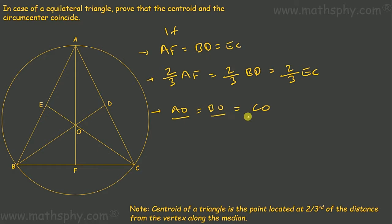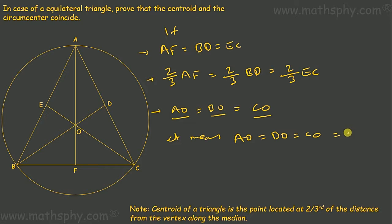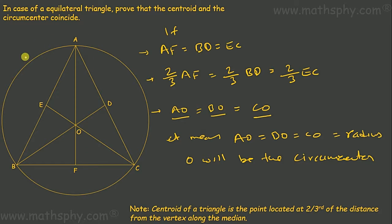Therefore AO is equal to BO is equal to CO. When AO, BO, and CO are equal, they are the radius of the circumscribed circle, making O the circumcenter. Since O is the centroid and also the circumcenter, the centroid and circumcenter coincide.